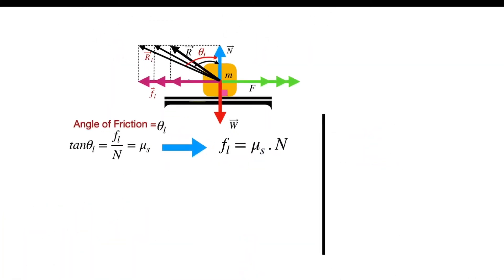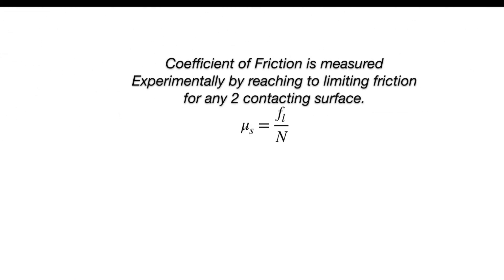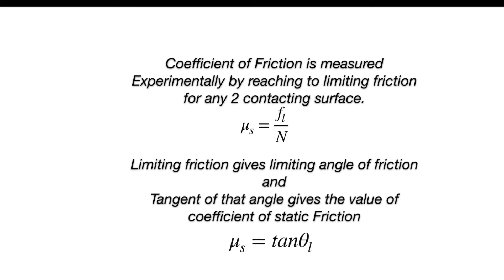The coefficient of static friction μs equals the limiting friction force divided by the normal force. The value of static friction is always less than or equal to the product of μs and N — in other words, static friction lies between zero and the maximum limiting frictional force. The value of μs is constant for a given pair of surfaces and equals tan of the limiting angle of friction. Coefficient of friction is measured experimentally by reaching limiting friction; tangent of the limiting angle gives μs.